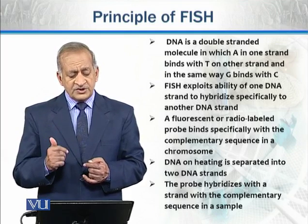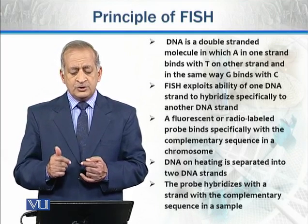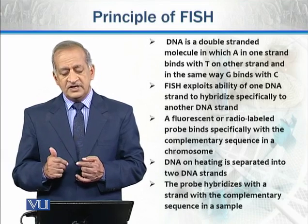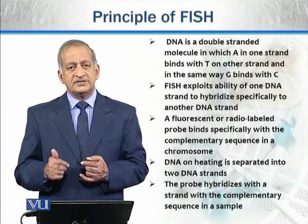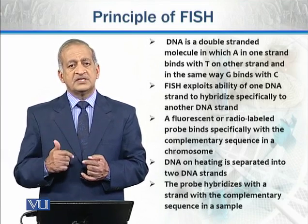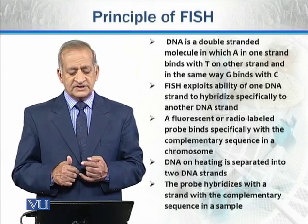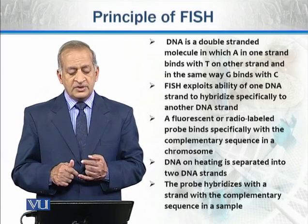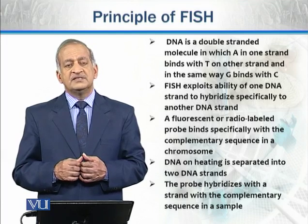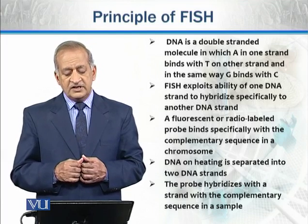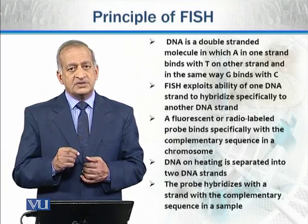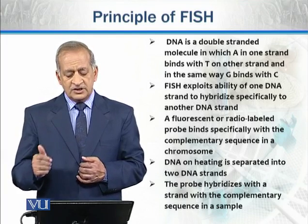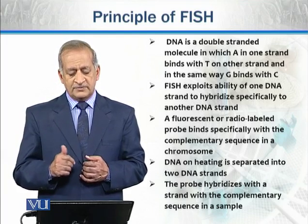FISH exploits the ability of one DNA strand to hybridize specifically to another DNA strand through these hydrogen bonds. A fluorescent or radio-labeled probe binds specifically with the complementary sequence present at a particular position in the chromosome of that sample.